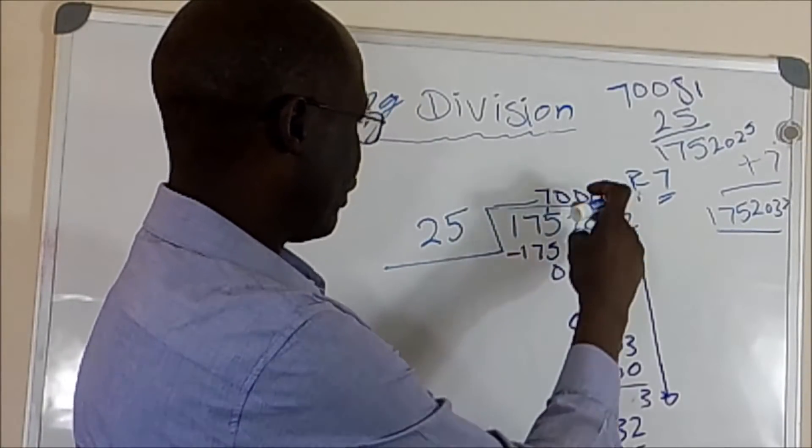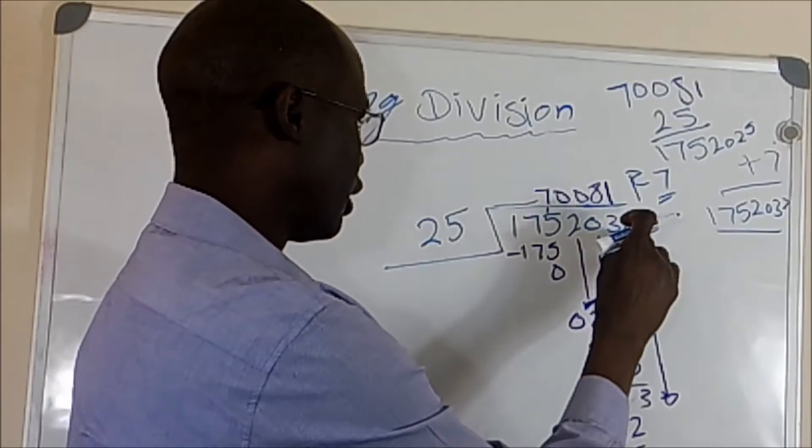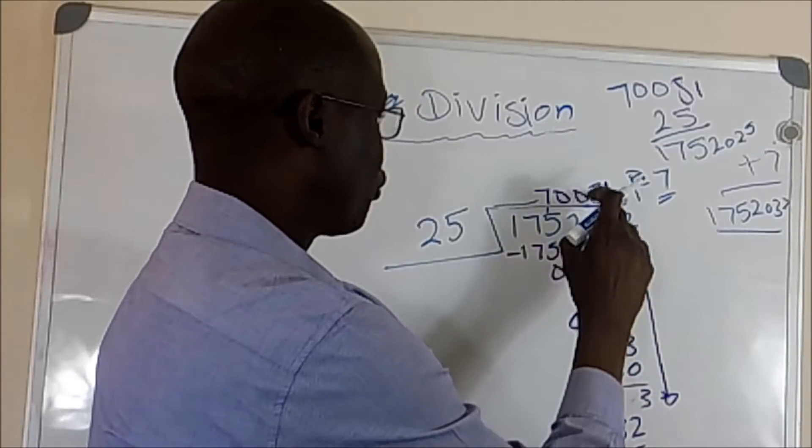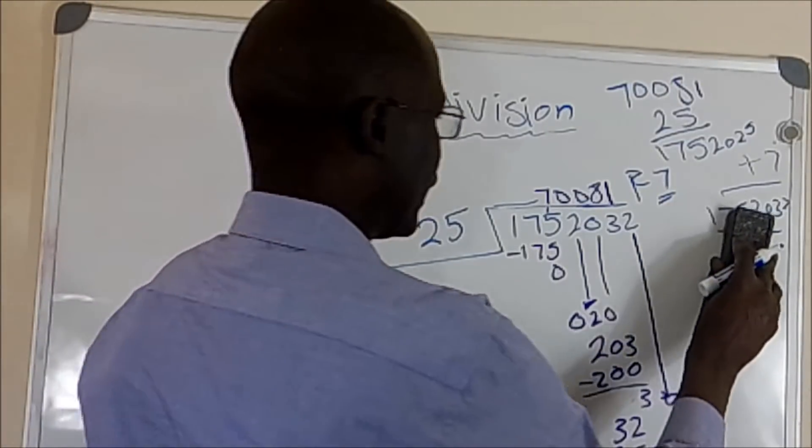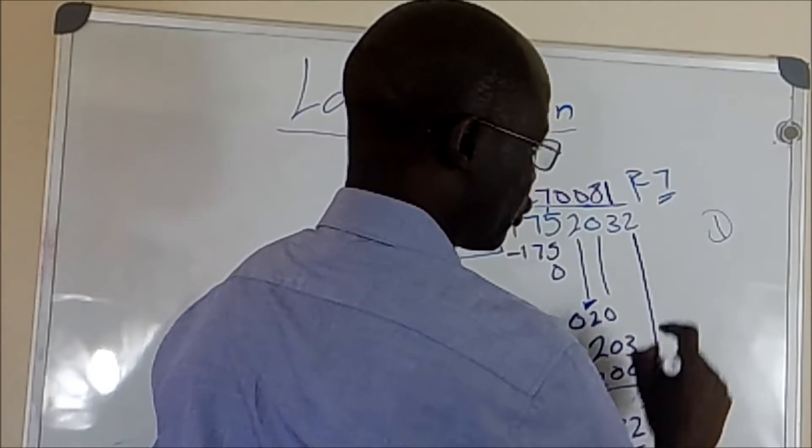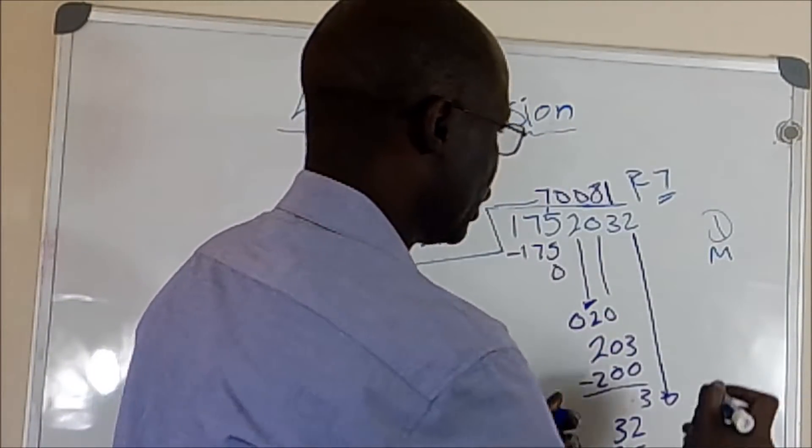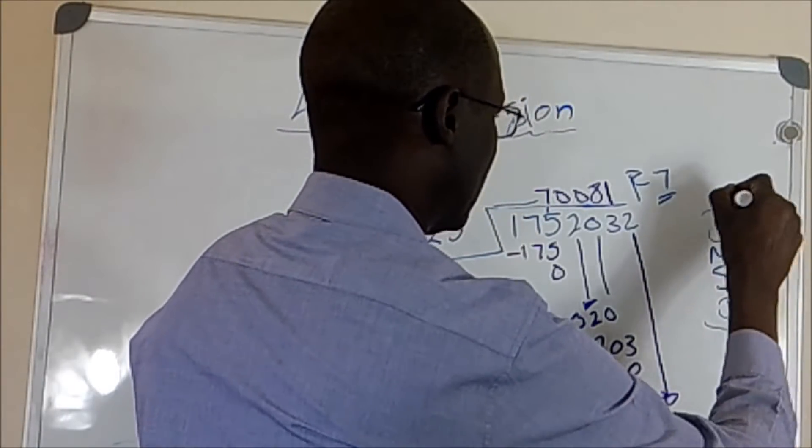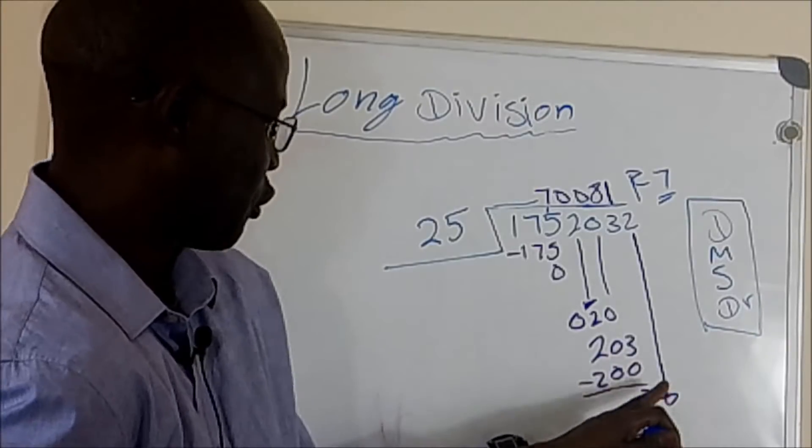We bring the 0 down, and then we bring 2, and we bring 0. We got 20. 20 divided by 25, it cannot, it's less, and then we bring 3. We got 203, and we put 8, it gives us 200, and we subtract 200. So the steps we do here, we repeat them. The first thing we did, we divide. So keep this in mind, we multiply, because we multiply 0 by 25 we got 0, and then we subtract, and then we drop. So keep those in mind as a rule as you solve this type of problem.